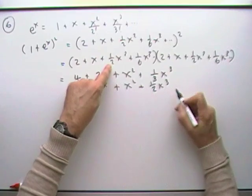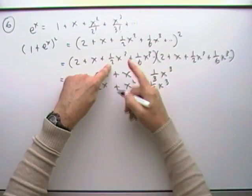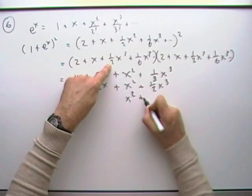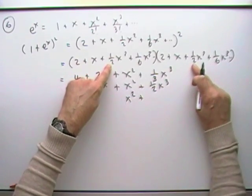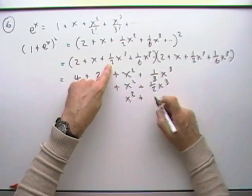A half x squared multiplying them all will give me 2 times a half is just the 1, so that'll give me an x squared. And a half times a half is, that's the wrong one, a half times the x is going to give me a half x cubed.